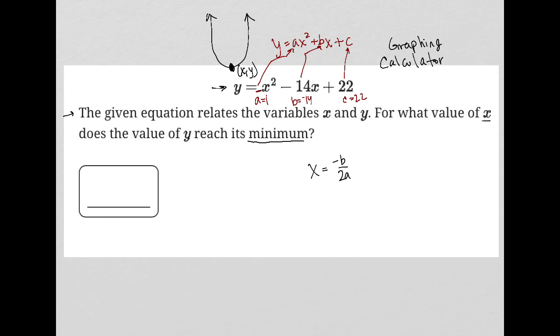So negative b over 2a would just be, instead of negative 14, it'd be negative negative 14, so positive 14. 2a, a is 1, so 2 times 1 is 2. 14 divided by 2 is 7, so the answer to our question here is 7.